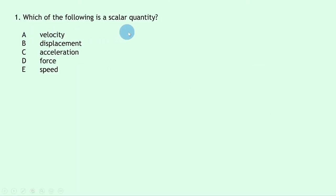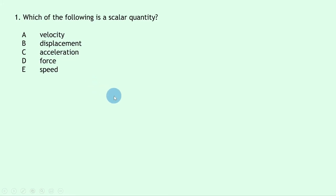Question 1 says which of the following is a scalar quantity? Remember a scalar quantity is a quantity that has a magnitude or size only — it doesn't have a direction. Looking at velocity, displacement, acceleration, force and speed, the only scalar is speed because force, acceleration, displacement and velocity all have a direction. So our answer here is E.